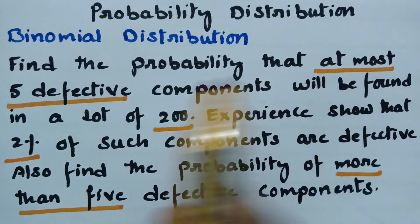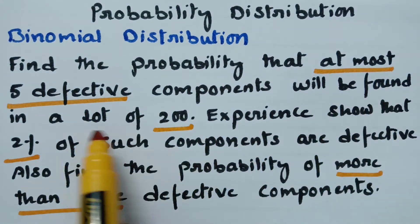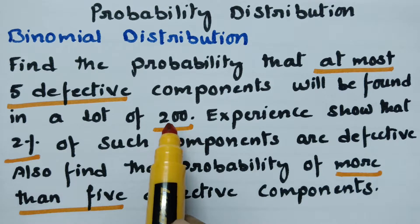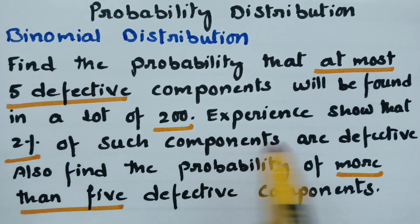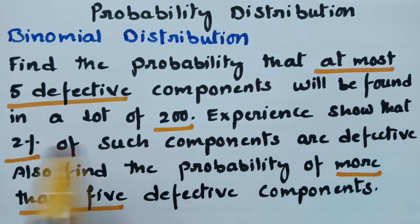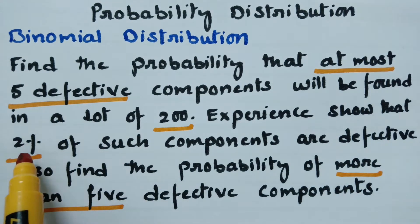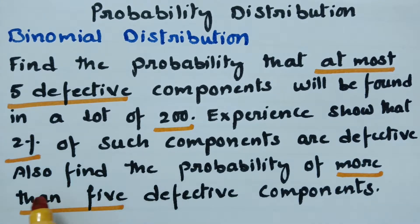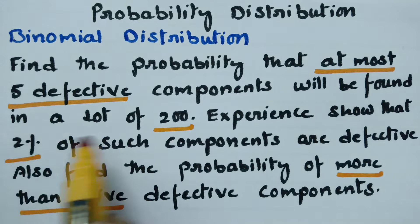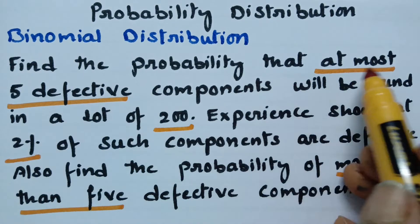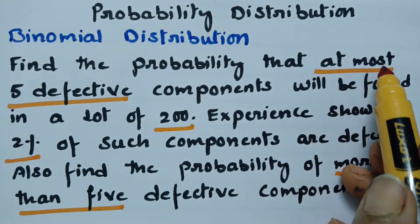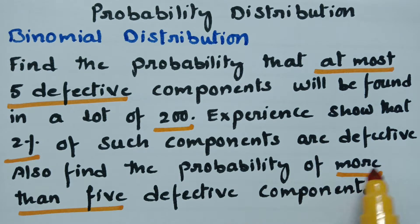Find the probability that at most five defective components will be found in a lot of 200. Here n is given as 200. Experiences show that 2% of such components are defective, so p is given as 2% and q is equal to 98%. We also need to find the probability of more than five defective items. So p is 2%, n is 200, and q we have to estimate as 98%.